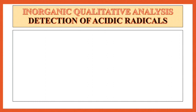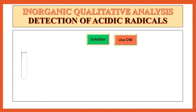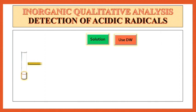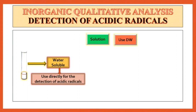Let us prepare the solution for the detection of acidic radicals. For the preparation of solution, always use distilled water. Take a clean and dry test tube, take a small portion of mixture, and to that add distilled water. After addition of distilled water, shake this mixture well. If the mixture is water soluble, then use this solution directly for the detection of acidic radicals.